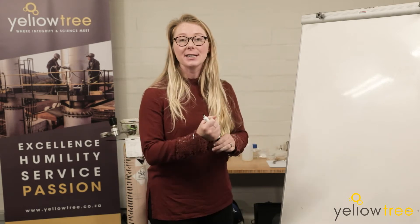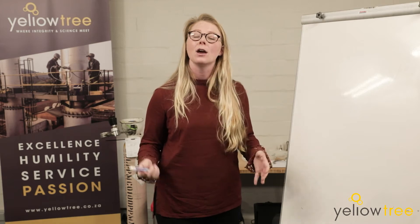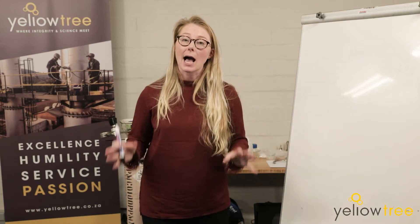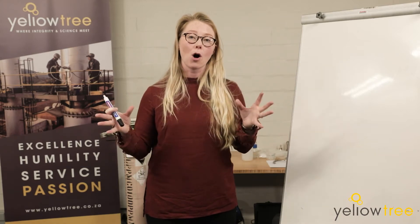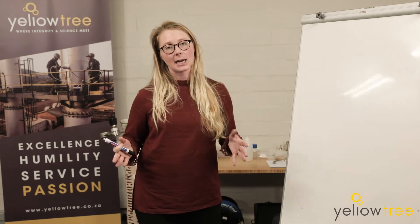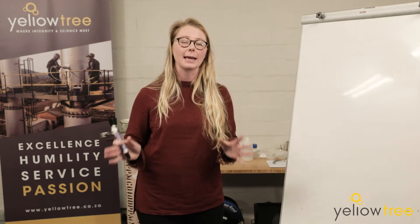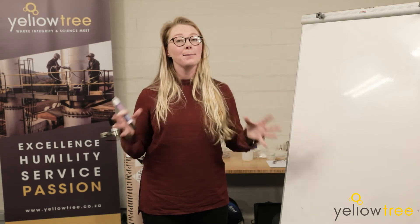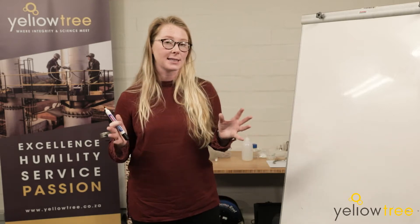Let's get started. The first thing I'm going to do is define what we mean by parts per million. When we talk about parts per million, we are talking about how many moles of pollutants are in 1 million moles of total gas. So let's use an example of sulfur dioxide. Let's say that we have measured 200 parts per million (ppm). What that actually means is that in 1 million moles of total gas, we have 200 moles of sulfur dioxide.